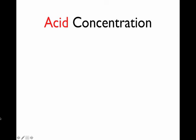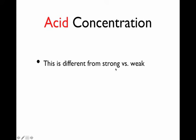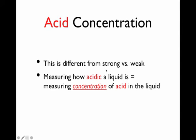This section deals with acid concentration, which is different from the topic we were talking about in the previous section — strong and weak acids and bases. Acid concentration is basically how much acid is dissolved in a certain amount of liquid, not whether the acid is good or not good at donating its protons. Acid concentration measures how acidic a liquid is — how concentrated the acid is in the liquid.